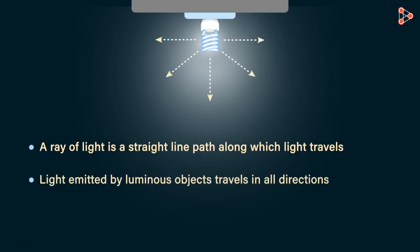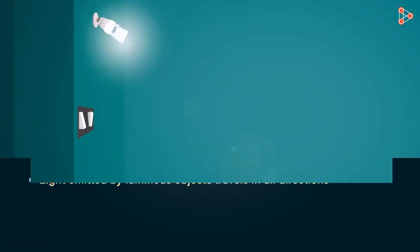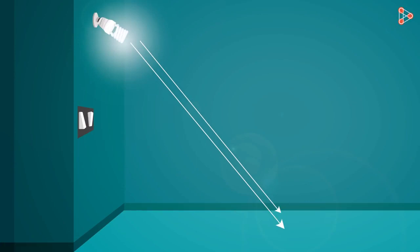So now we know that light emitted by luminous objects travel in a variety of directions. Suppose rays of light from this fluorescent bulb fall on the surface. It being non-luminous reflects these rays and these reflected rays travel along a certain path.